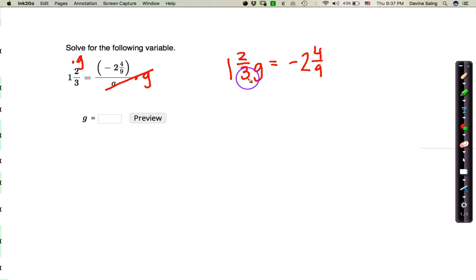Now, what I'm going to do is go ahead and notice it looks just like any other problem now. This means 1 and 2 thirds times g. So to get g by itself, I'm going to do the inverse operation. Since it's being multiplied, I'm going to go ahead and divide both sides by 1 and 2 thirds.